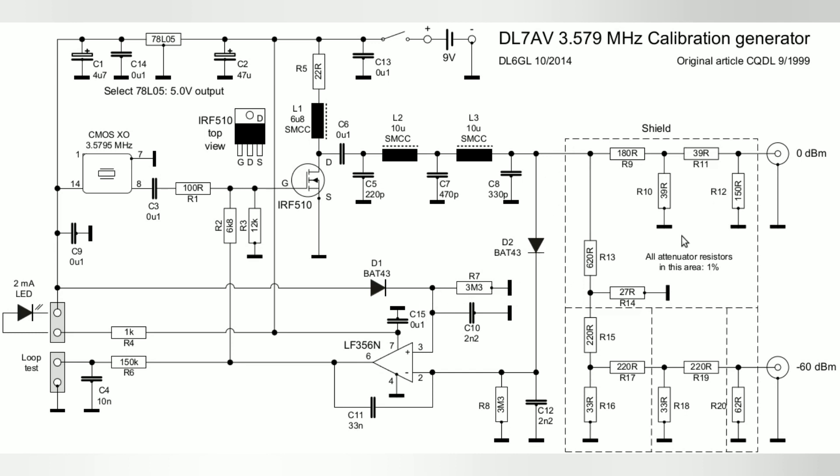Then the RF is fed into an attenuator here and produces 0 dBm output. It's also fed into a further attenuator to get -60 dBm output. 0 dBm is exactly 1 milliwatt. -60 dBm is equivalent to S9 plus 11 dB on an S meter.